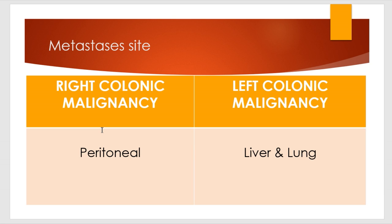Regarding metastatic site: the most common site of metastasis in right colonic malignancy is peritoneal — peritoneal mets are very common in right colonic malignancy. Whereas in left colonic malignancy, the most common sites are either the lung or the liver.